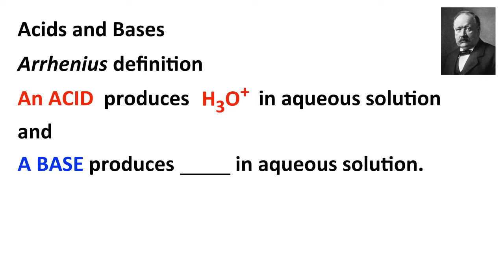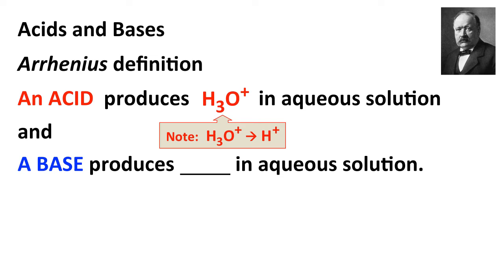As a note, hydronium ion is what's actually produced by an Arrhenius acid. We sometimes use H+ as a shorthand for H3O+, even though it's technically not correct — more on that in a little bit. In the Arrhenius definition, a base is a substance that produces hydroxide ions, OH-, in aqueous solution.